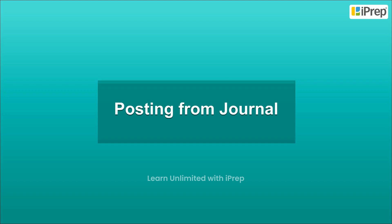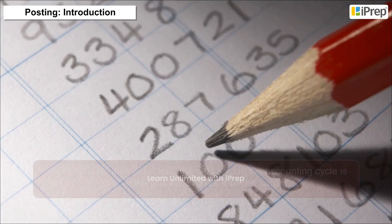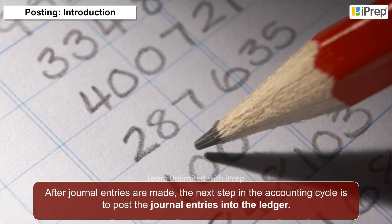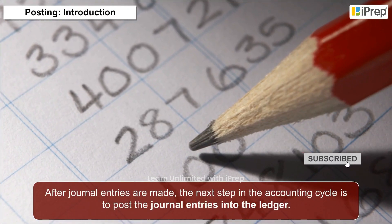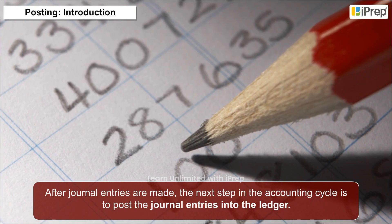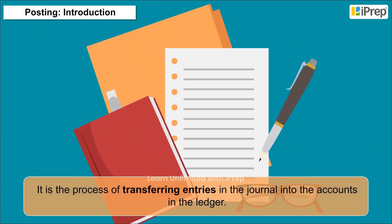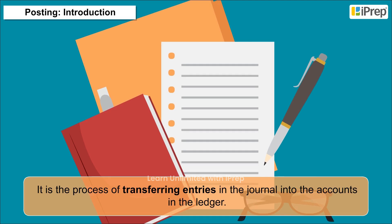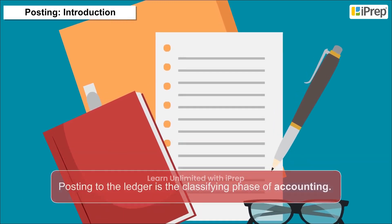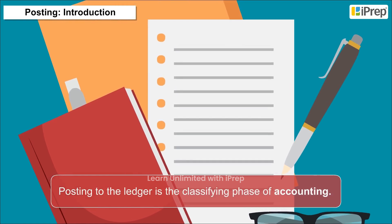Posting from Journal — Introduction. After journal entries are made, the next step in the accounting cycle is to post the journal entries into the ledger. It is the process of transferring entries in the journal into the accounts in the ledger. Posting to the ledger is the classifying phase of accounting.